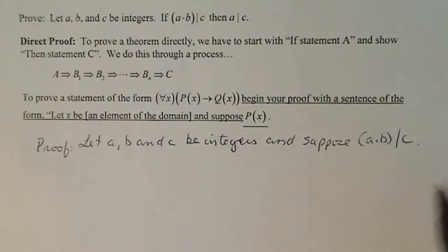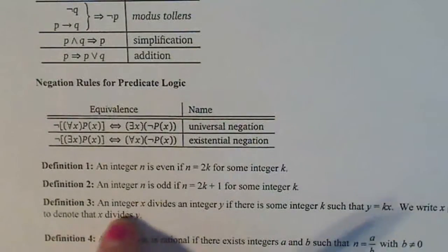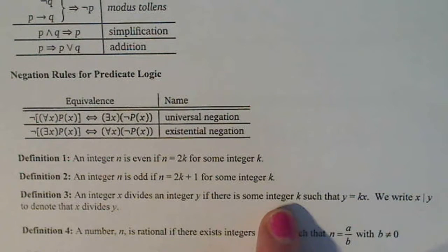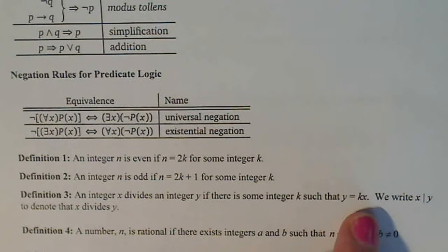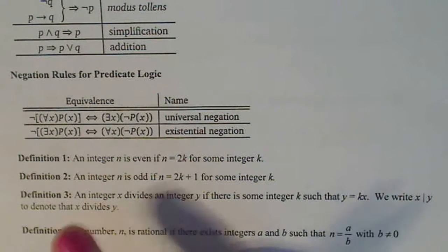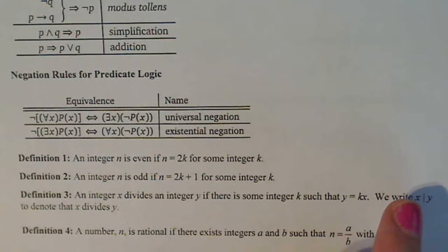Now what does this mean, a times b divides c? If I go to the definition here, it says number three: an integer x divides an integer y if there is some integer k such that y equals k times x. So we write x divides y to denote that x divides y. I have to pull out this k, this is an integer that exists in my problem such that x times k equals y.